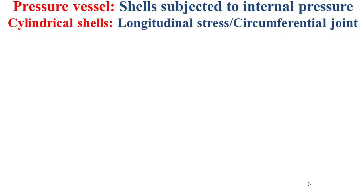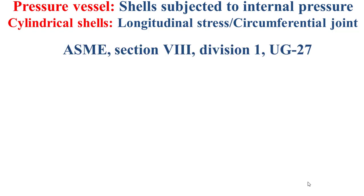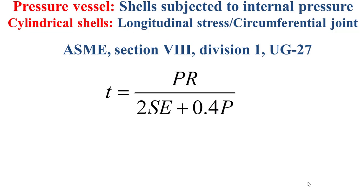For the case of a cylindrical shell with a stress state dominated by longitudinal stress, the welded joints should be circumferential. Based on ASME Section 8 Division 1, UG-27, the thickness of the cylindrical shell should be no less than the value obtained by the formula shown in this slide.